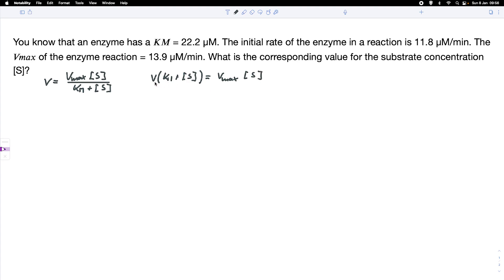We multiply the initial rate into the bracket and we get V times KM plus V times the substrate concentration equals Vmax times the substrate concentration.